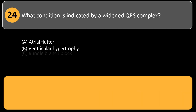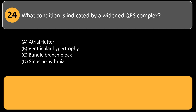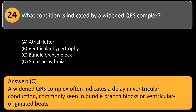What condition is indicated by a widened QRS complex? A. Atrial flutter. B. Ventricular hypertrophy. C. Bundle branch block. D. Sinus arrhythmia. Answer: C. A widened QRS complex often indicates a delay in ventricular conduction, commonly seen in bundle branch blocks or ventricular-originated beats.